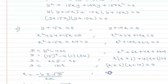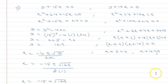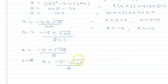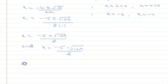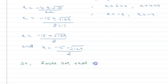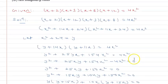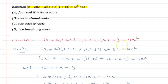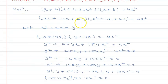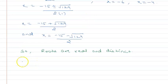So x plus 6 equals zero or x plus 4 equals zero, giving x equals negative 6 and x equals negative 4. Looking at all the roots, they are all real numbers and they are all different, so the roots are real and distinct. Checking the options, option A is correct.